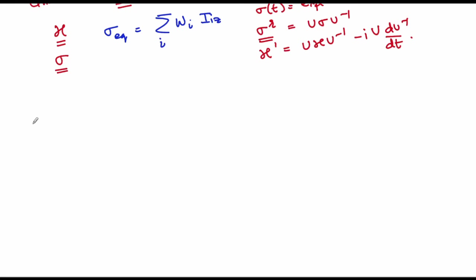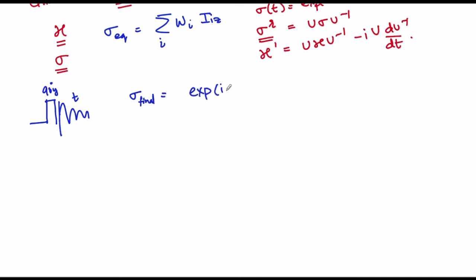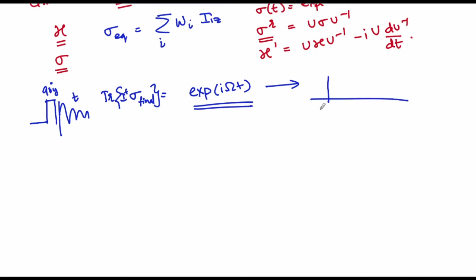This whole topic was also applied for a one-pulse experiment where we had a 90y pulse applied followed by acquisition. In the first example, we saw that the trace of I+ with the final density matrix was given as e^(iΩt). This is exactly what gives you a resonance at plus Ω and nothing at minus Ω.